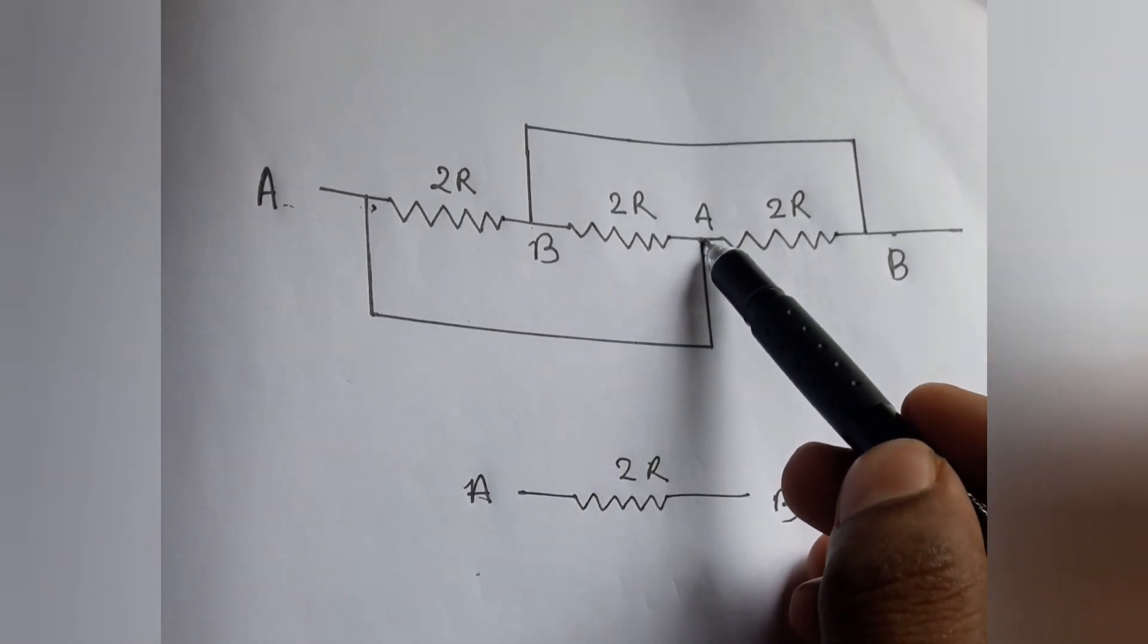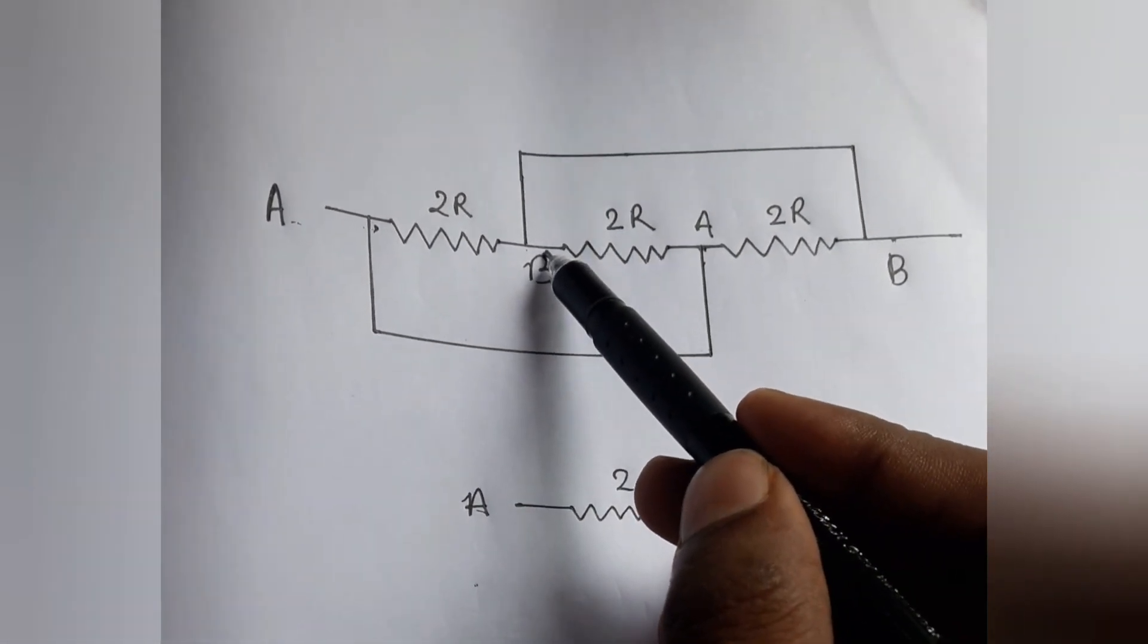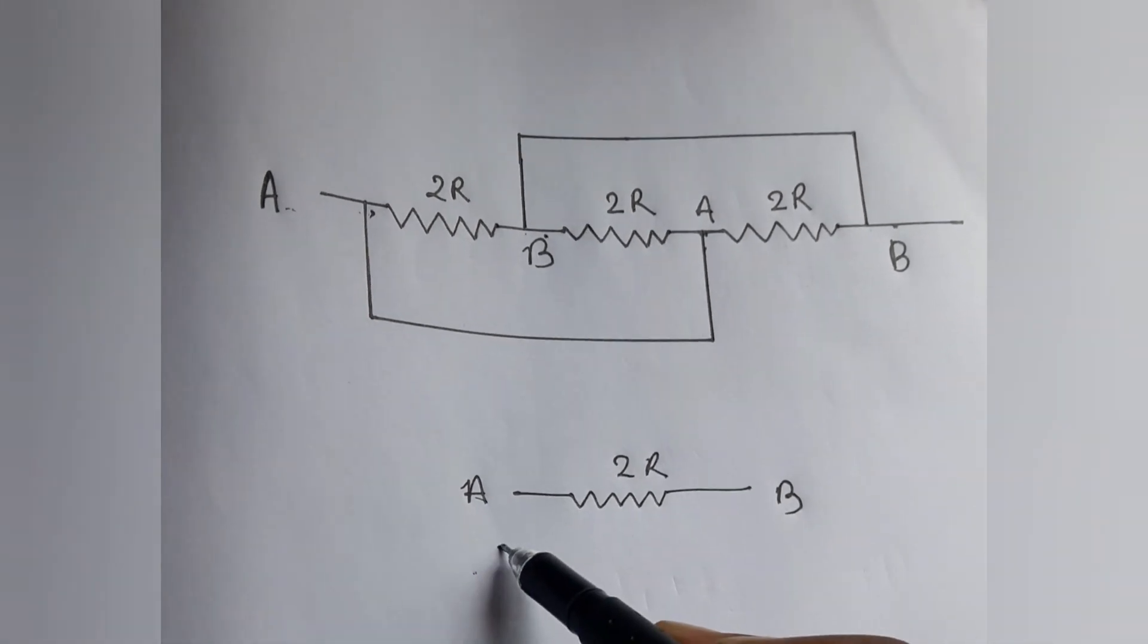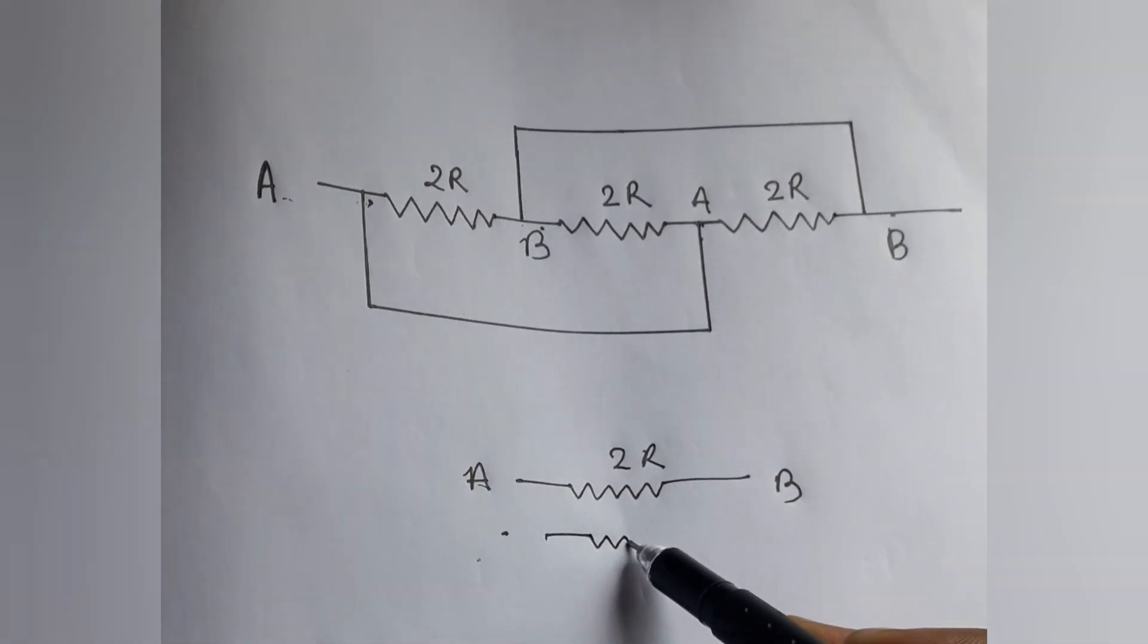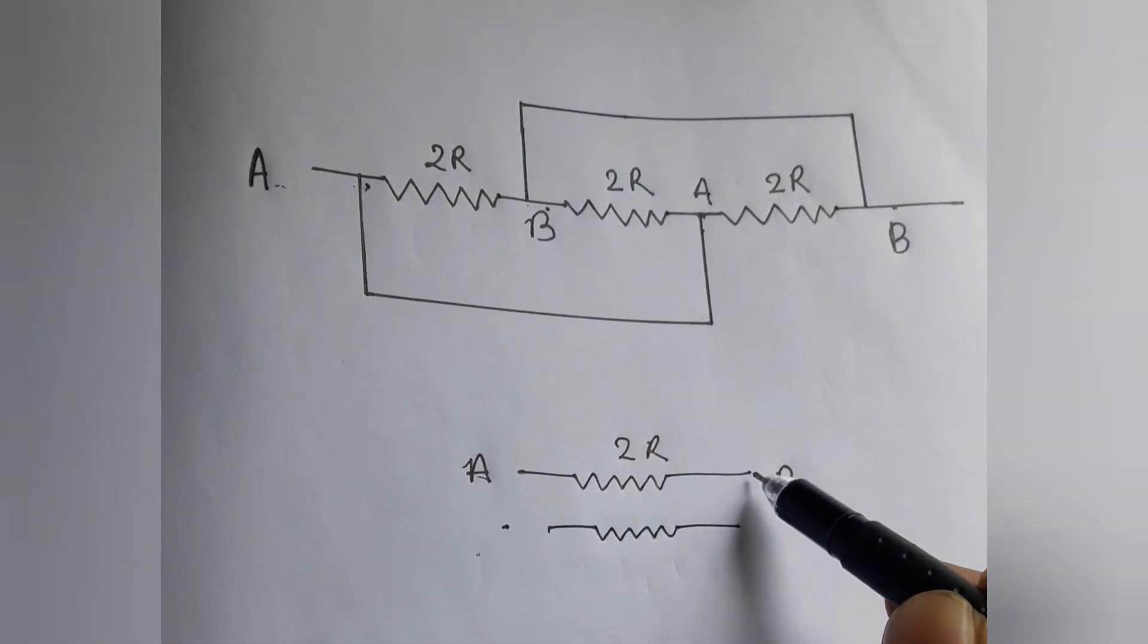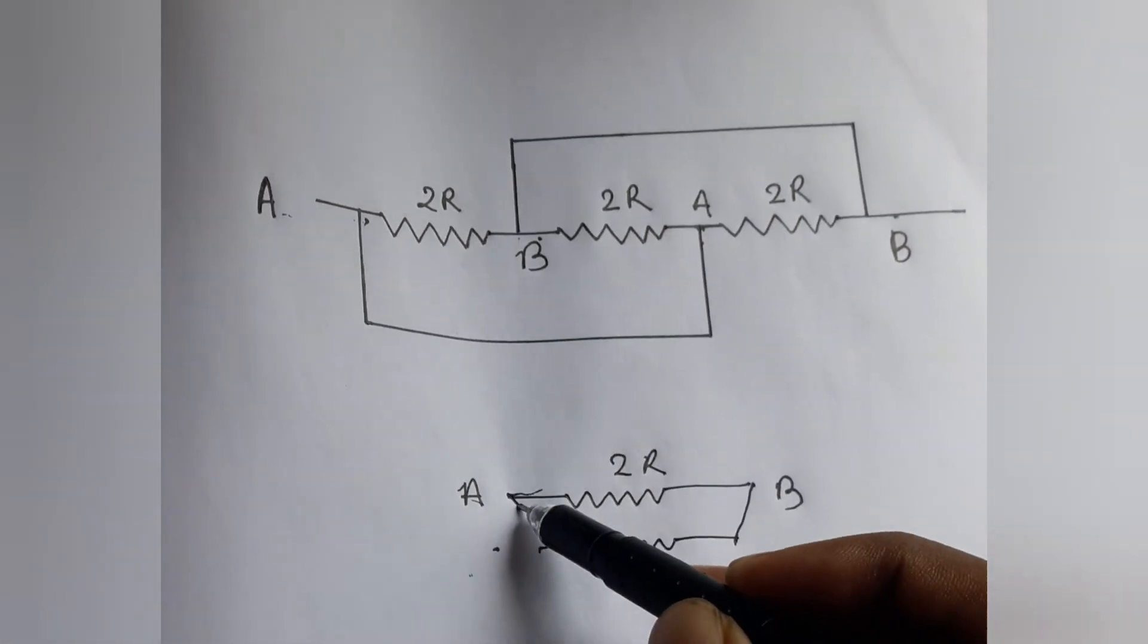Now see the second resistance 2R. This is the point A and this is the point B. Now we draw it. This is B and this is A.